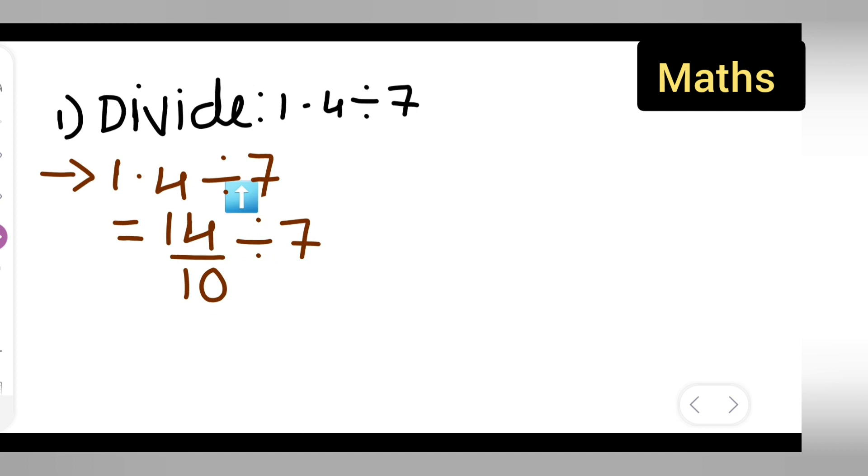Now 14 upon 10 divided by 7, you'll have to do so. First write down 14 upon 10, then put multiply by the reciprocal of 7, which is 1 upon 7.